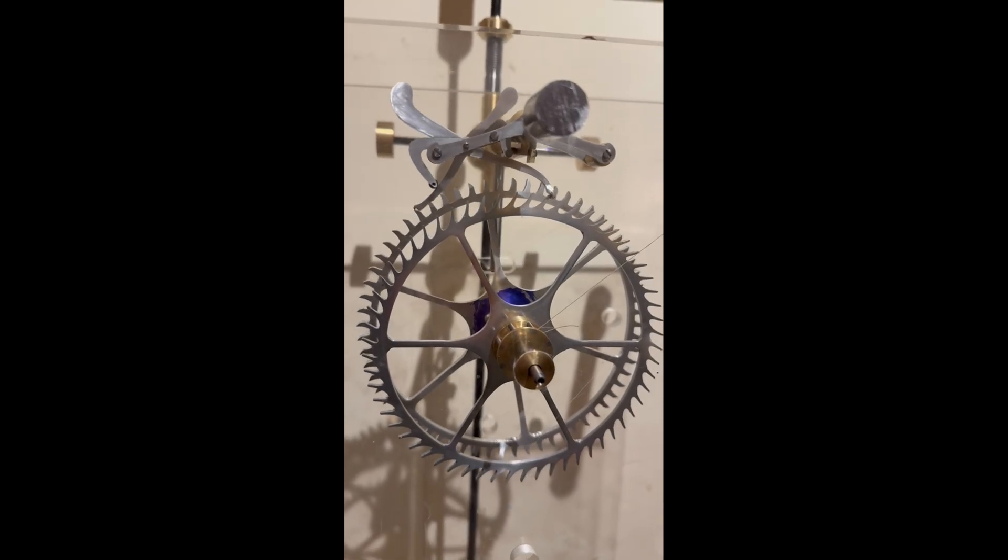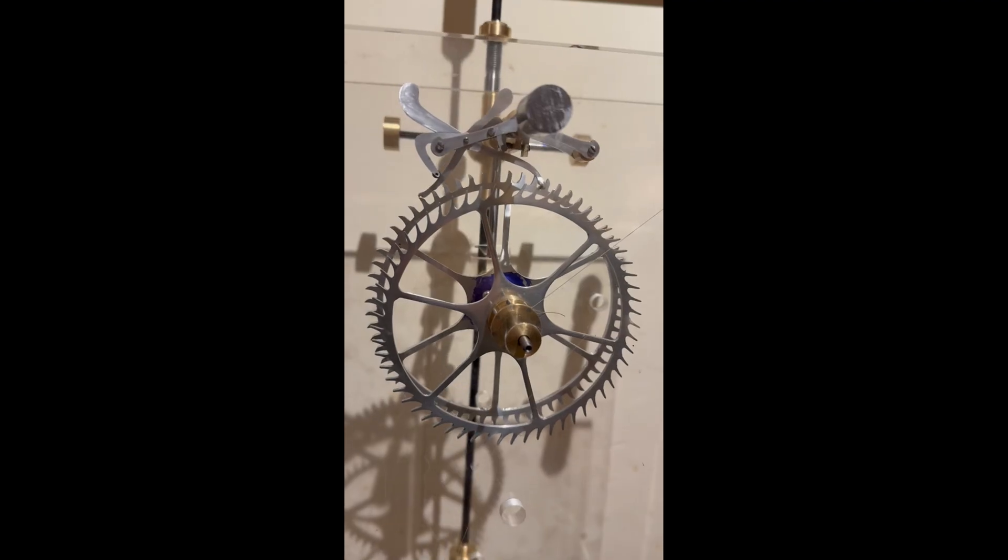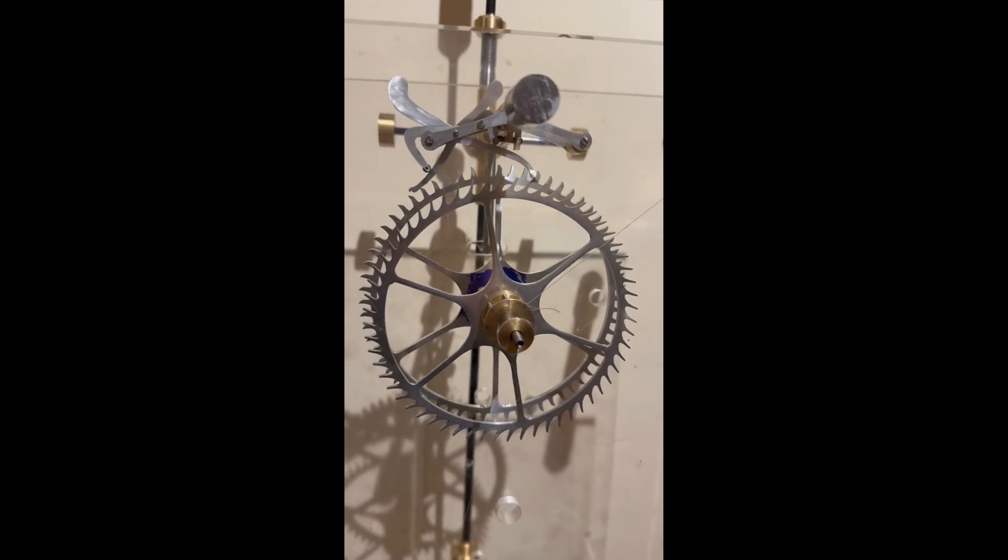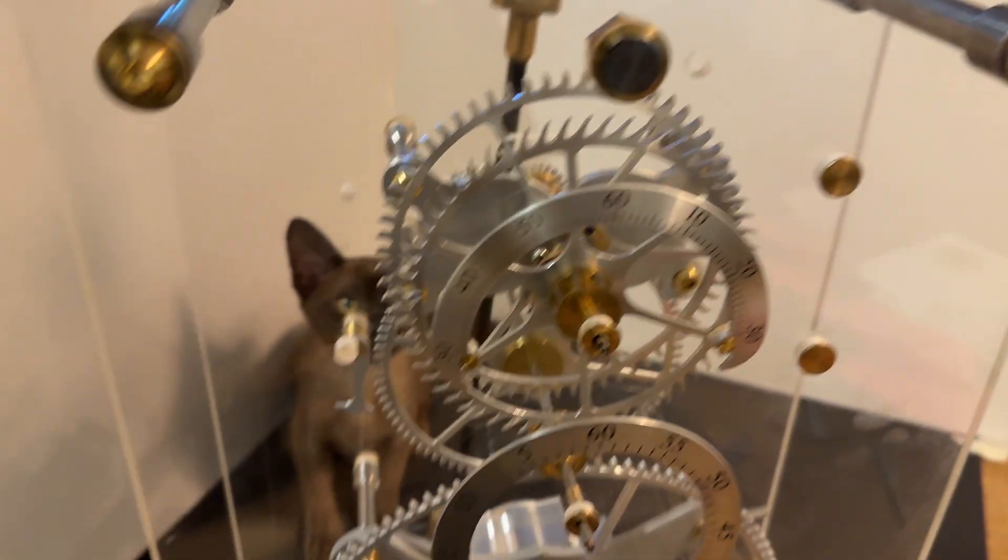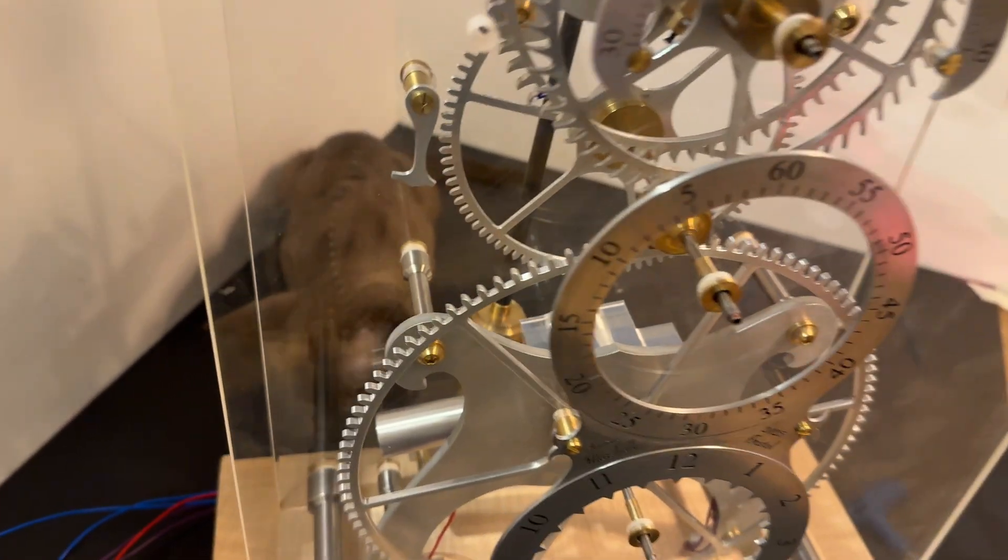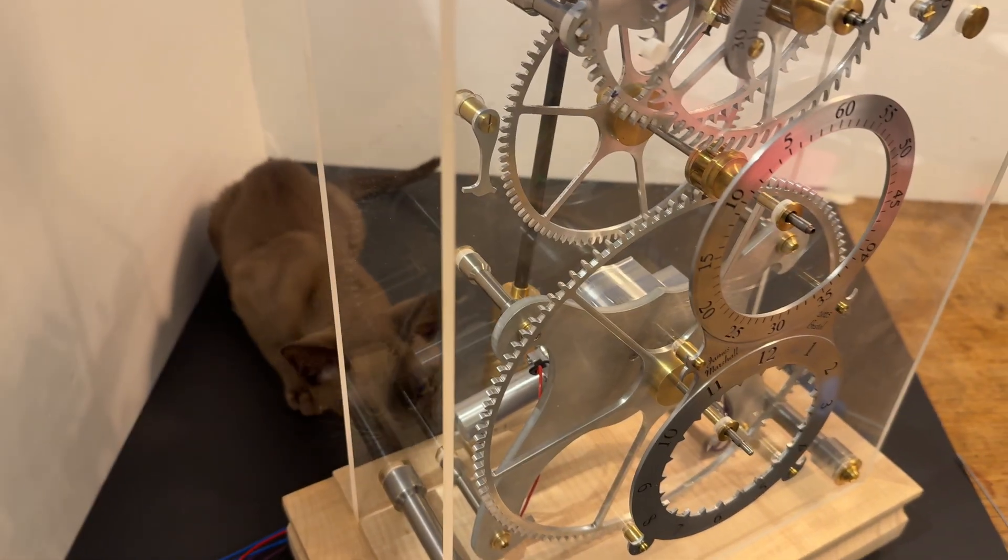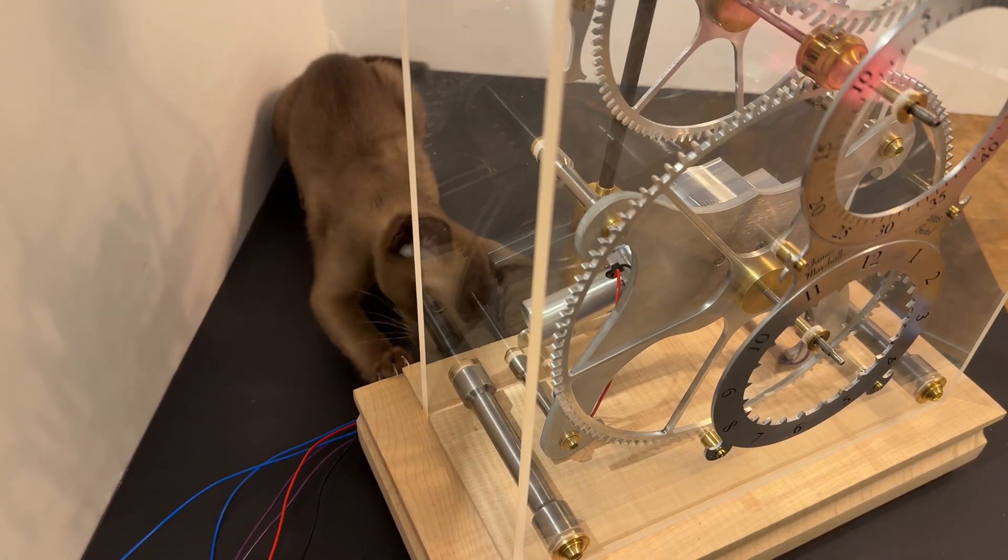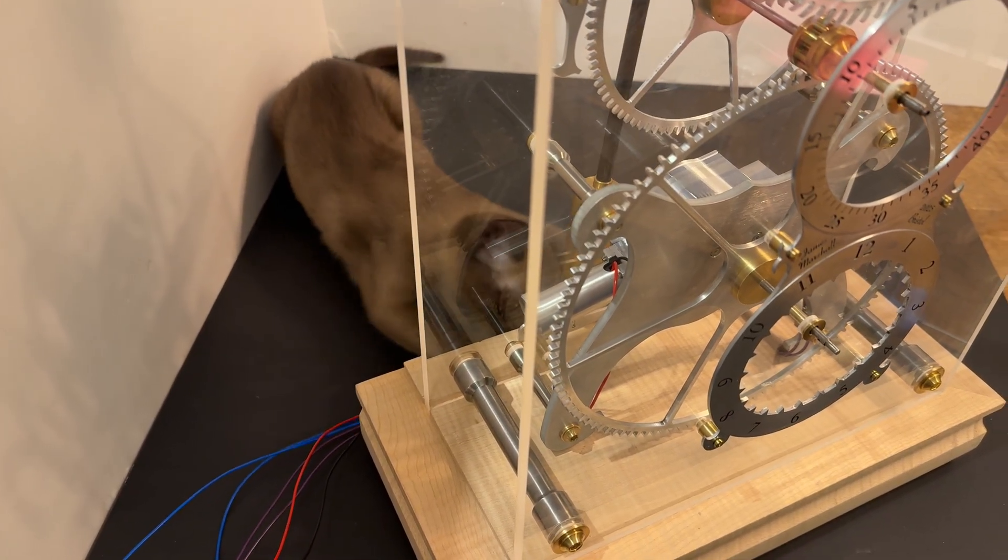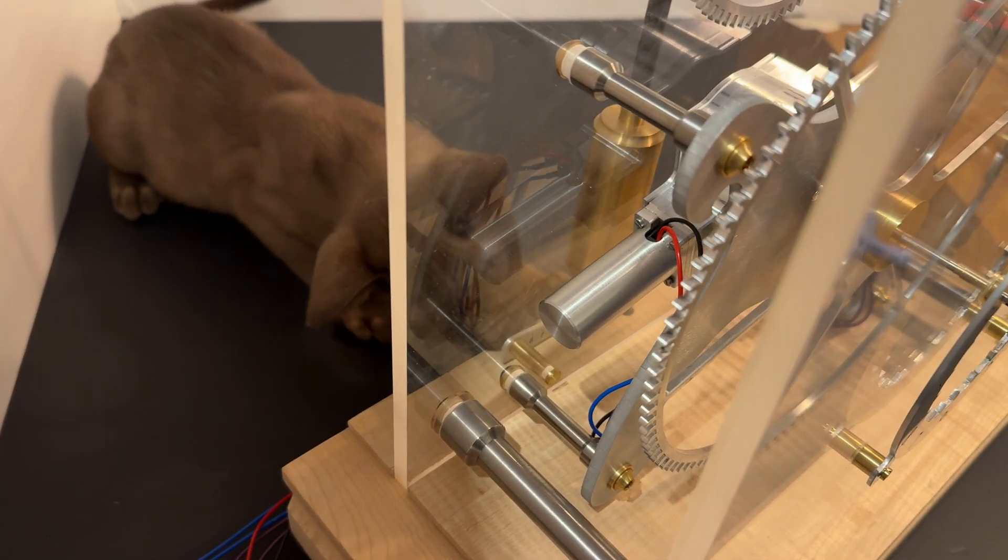And here is the escape wheel and the remontoir wheel and the grasshopper mounted and working. In the next few videos I'm going to take you on a tour of the clock as it currently stands hopefully explaining all the various elements from top to bottom and I hope this current video that you're watching serves as a warning against clock making and having a kitten. They really don't go together.